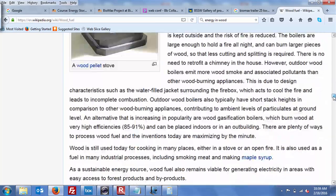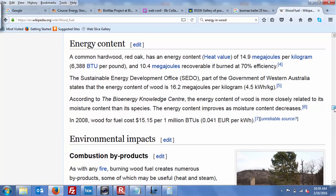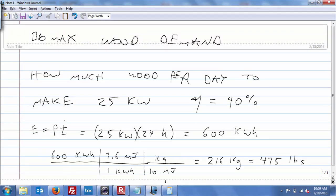I think starting with 20. So here we go, common hardwood. There's 14.9, here's 10.4 megajoules recoverable if burned at 70% efficiency. I just threw 10 megajoules in there as an engineering estimate and came up with 216 kilograms. Multiply that by 2.2, it's a quarter ton of wood.